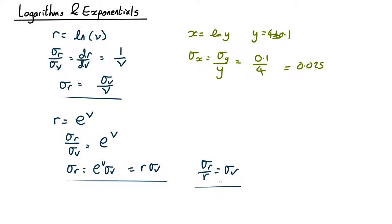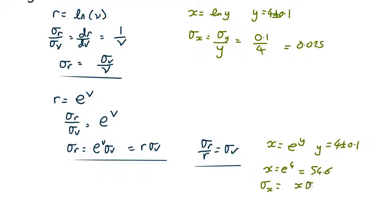Let's do an example of that. If x equals e to the y and y equals 4 plus or minus 0.1. Then x equals e to the 4 equals 54.6 and sigma x equals x sigma y equals 54.6 times 0.1 equals 5.46.